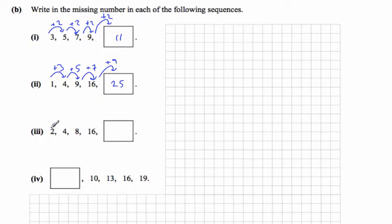Part three: if we look at the jumps again, the first jump is two, the next jump is four, and the third jump is eight. So this time the jumps are changing, but if we look at the pattern of the jumps—plus 2, plus 4, plus 8—the jumps themselves are actually doubling. So the next one will be a jump of 16, and 16 plus 16 is 32.